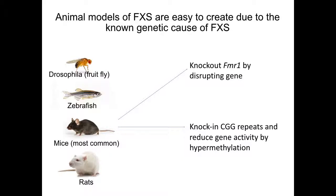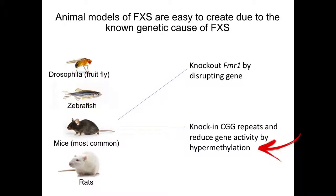Since the genetic mutation in Fragile X syndrome is known, it is relatively straightforward to create genetic animal models of the disease by disrupting the FMR1 gene in model organisms. Fragile X syndrome genetic models have been created in fruit flies, zebrafish, mice, and rats. Mouse models are the most common, and two types of genetic disruptions have been created: an FMR1 knockout, where the gene has been deliberately disrupted, and a CGG repeat knock-in, which aims to replicate the repeat expansion seen in humans.